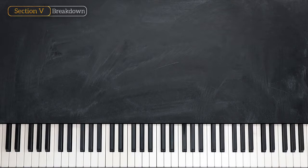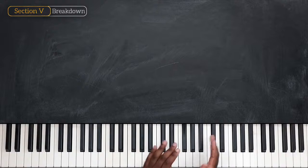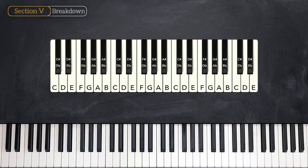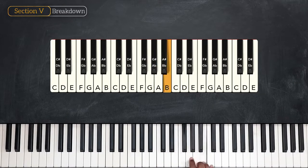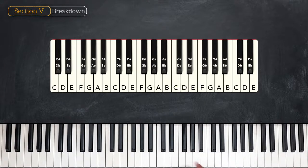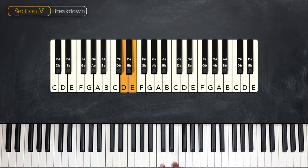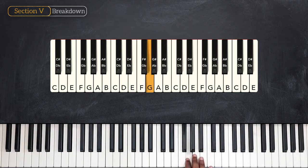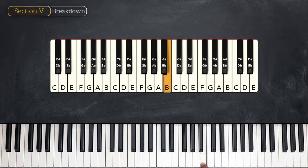For this part, instead of giving you the formula and explaining the logic behind it, I'm going to do the reverse and first explain how that formula came to be. So let's take the C major scale. The notes of that scale are C, D, E, F, G, A, and B. And then it repeats.